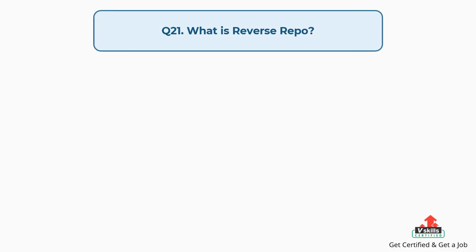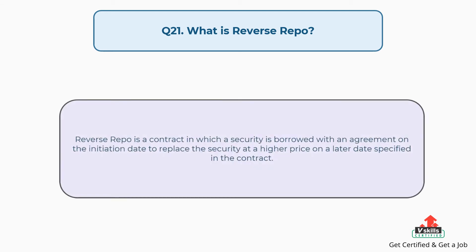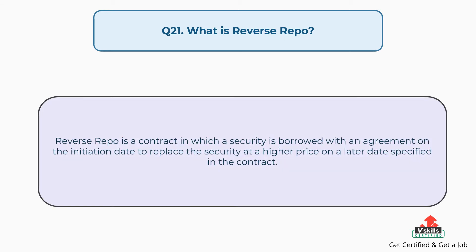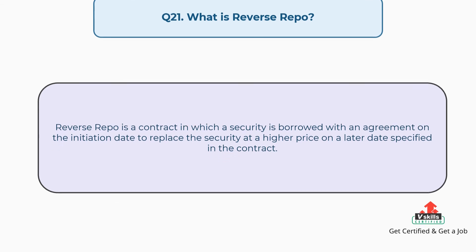Question number twenty-one: what is reverse repo? The answer is, reverse repo is a contract in which a security is borrowed with an agreement on the initiation date to return the security at a higher price on a later date specified in the contract.